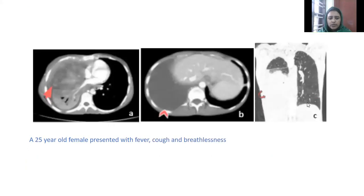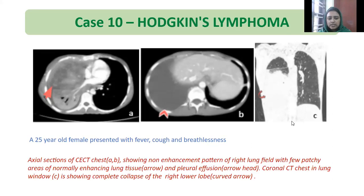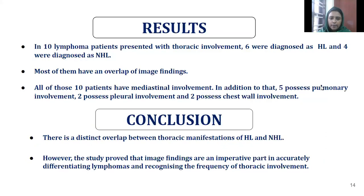Last case: a 25-year-old female who presented with fever, cough, and breathlessness. Axial sections of CT chest showing non-enhancing pattern of the right lung field with few patchy areas of normally enhancing lung tissue and pleural effusion. Coronal CT chest in lung window showing complete collapse of the right lower lobe. Biopsy revealed Hodgkin's lymphoma.